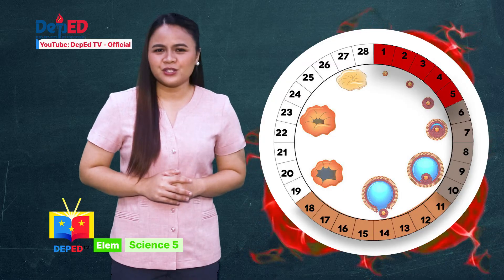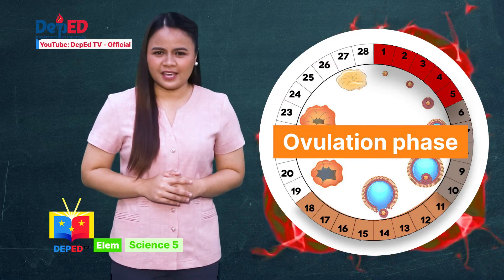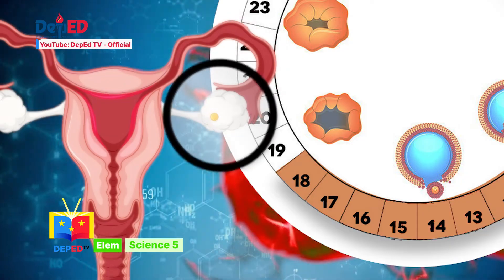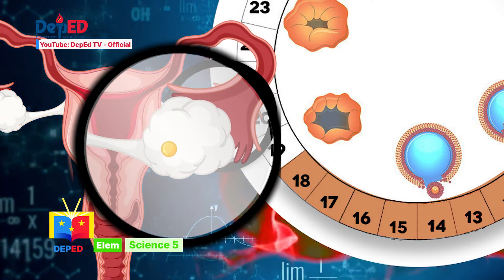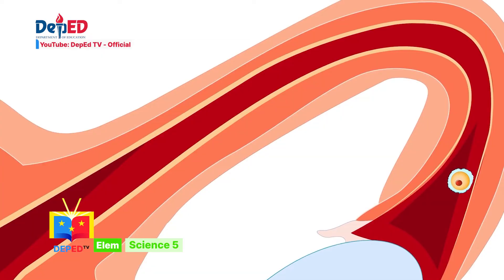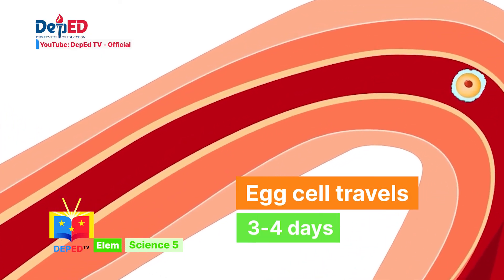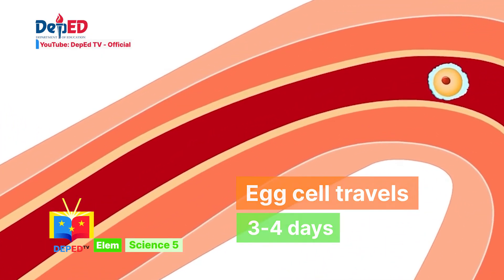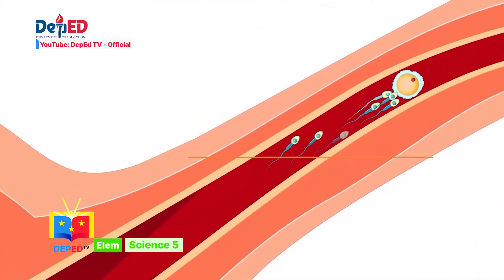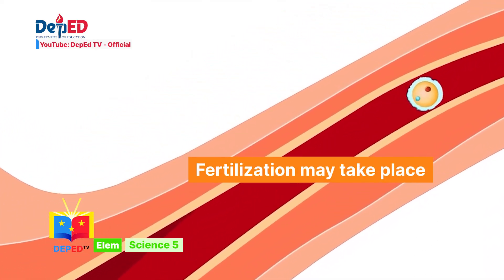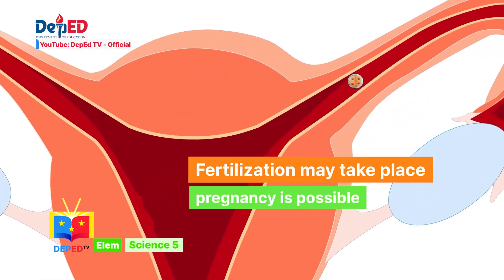Day eleven to eighteen is the ovulation phase. Ovulation occurs when an egg is released by the ovary. The egg cell travels along the fallopian tube for about three to four days and waits for a sperm cell. In this stage, fertilization may take place, thus pregnancy is possible.